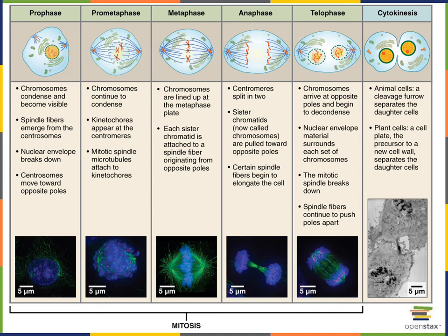Then the anaphase step of mitosis occurs when the mitotic spindles pull the sister chromatids apart. The mitotic spindle draws each sister chromatid towards each pole of the cell.